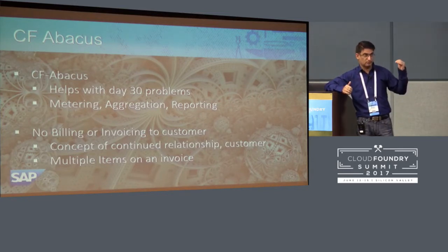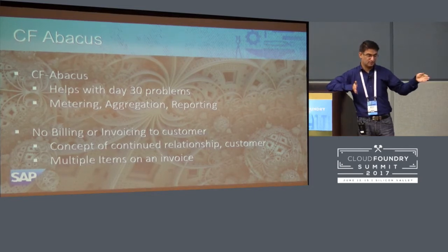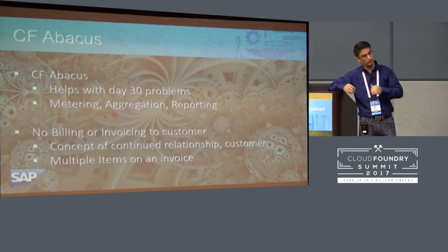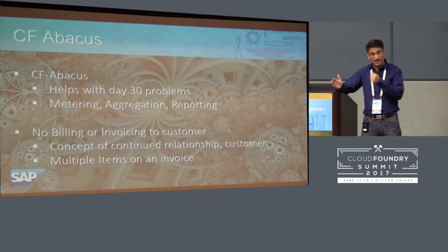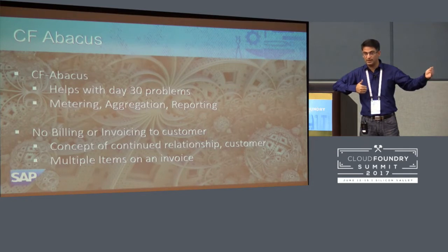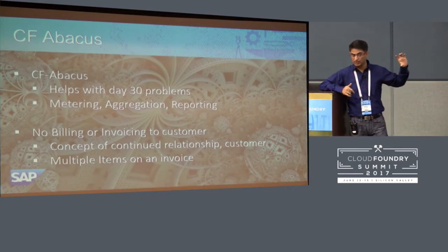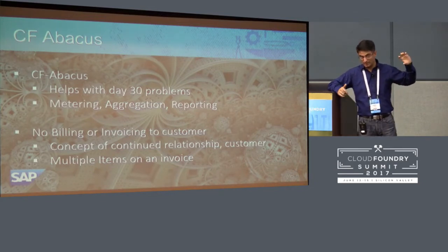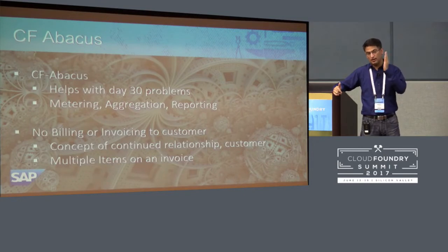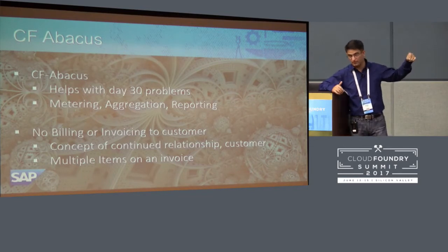CF Abacus acts as a calculator — a big calculator. It doesn't maintain state in the sense of tracking an ongoing relationship. It will price a transaction: I am going to call this API, and this is how much it's going to charge. But what about all the different kinds of APIs I call, and I need a consolidated invoice or bill at the end of the month? Those were the constraints around which CF Abacus was designed: metering, accumulation, aggregation. It is not a billing engine — that's what Revenue Cloud provides.